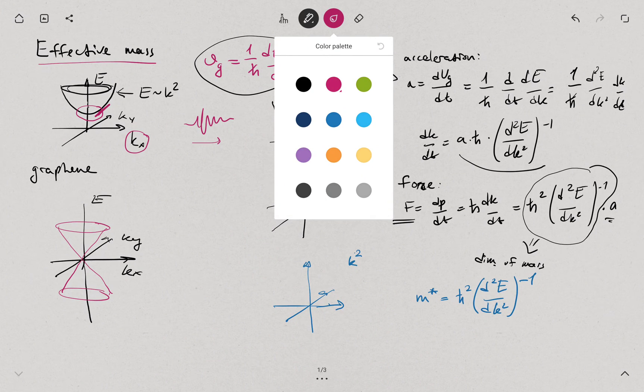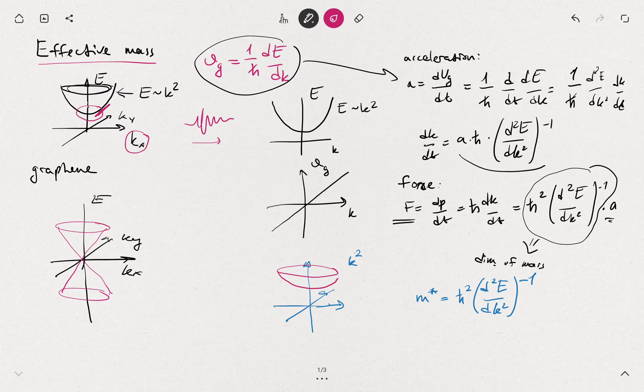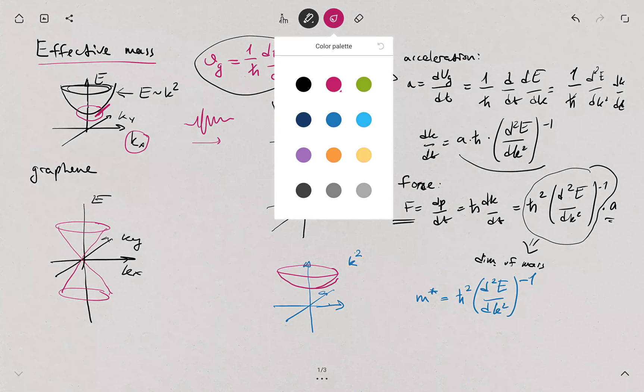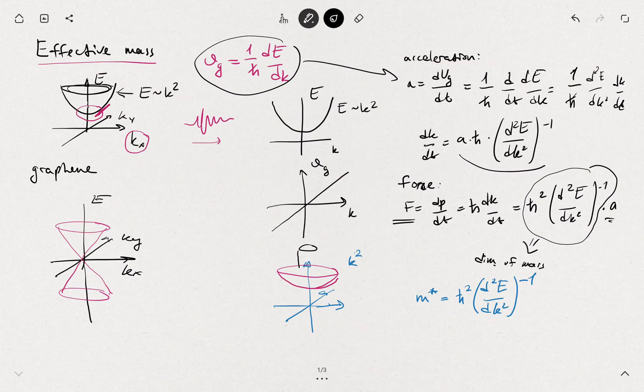In one case you have a narrow behavior, and in the other case for a different material maybe you have a wider behavior. This one has much higher curvature than this one, and this means the effective mass because it's the inverse. For this one we'll have m*₁ and this is m*₂. m*₂ will be much much higher than m*₁, so the particles in this system with wide dispersion relation behave as very heavy particles compared to this light one.